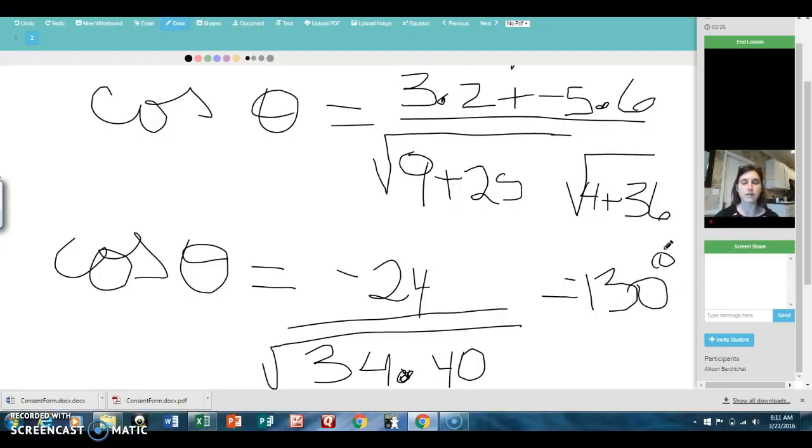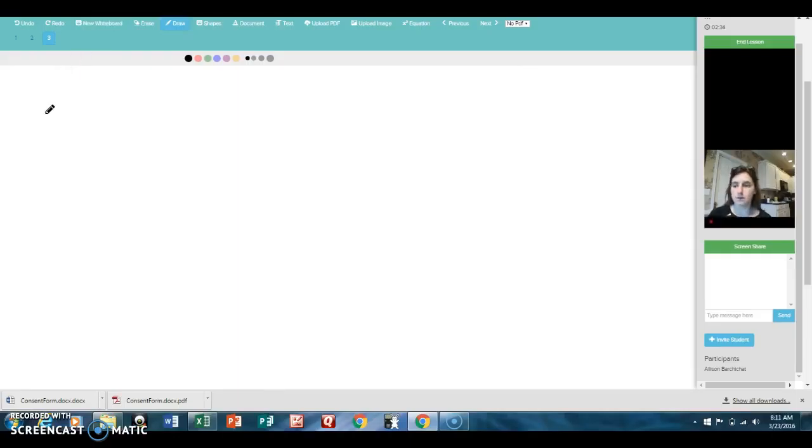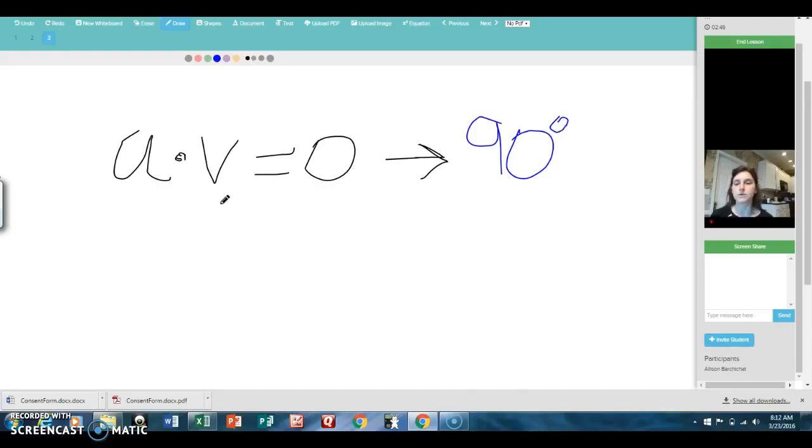Okay, so now we're going to talk about a couple of patterns that we can see from looking at the cosine. So the first thing I can tell you is that if the dot product of u and v is equal to zero, then that means the angle between the two vectors is 90 degrees because the cosine of 90 is zero. When two vectors are at a 90 degree angle or perpendicular, in the vector world we have a special word for it: orthogonal.